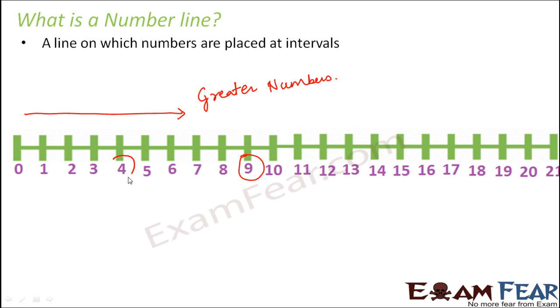For example, let's compare 9 with 4. So 9 is on the right of 4 on the number line, which shows that 9 is greater than 4. Similarly, if you compare 18 with 9, 18 lies on the right of 9, which shows that 18 is greater than 9.